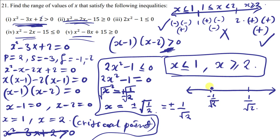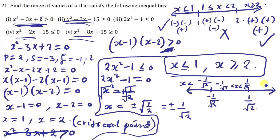On the number line, to the left you have x less than negative 1 over root 2. In the middle you have negative 1 over root 2 less than x less than 1 over root 2. To the right you have x greater than 1 over root 2. These are the three regions to test.